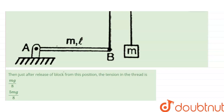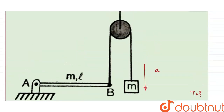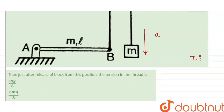We need to calculate the tension in the string just after the block is released. The block moves vertically downward with acceleration a. This means the rod rotates with angular acceleration α in the anti-clockwise direction. So a is the linear acceleration of the block and α is the angular acceleration of the rod — this is our assumption.